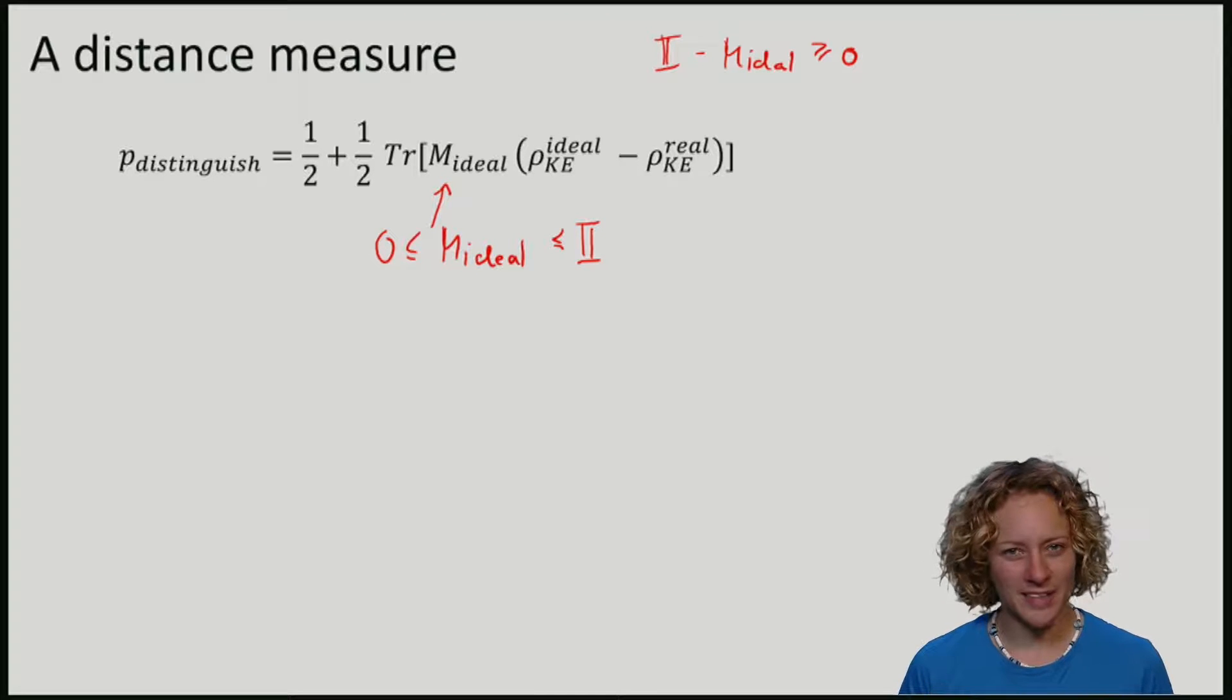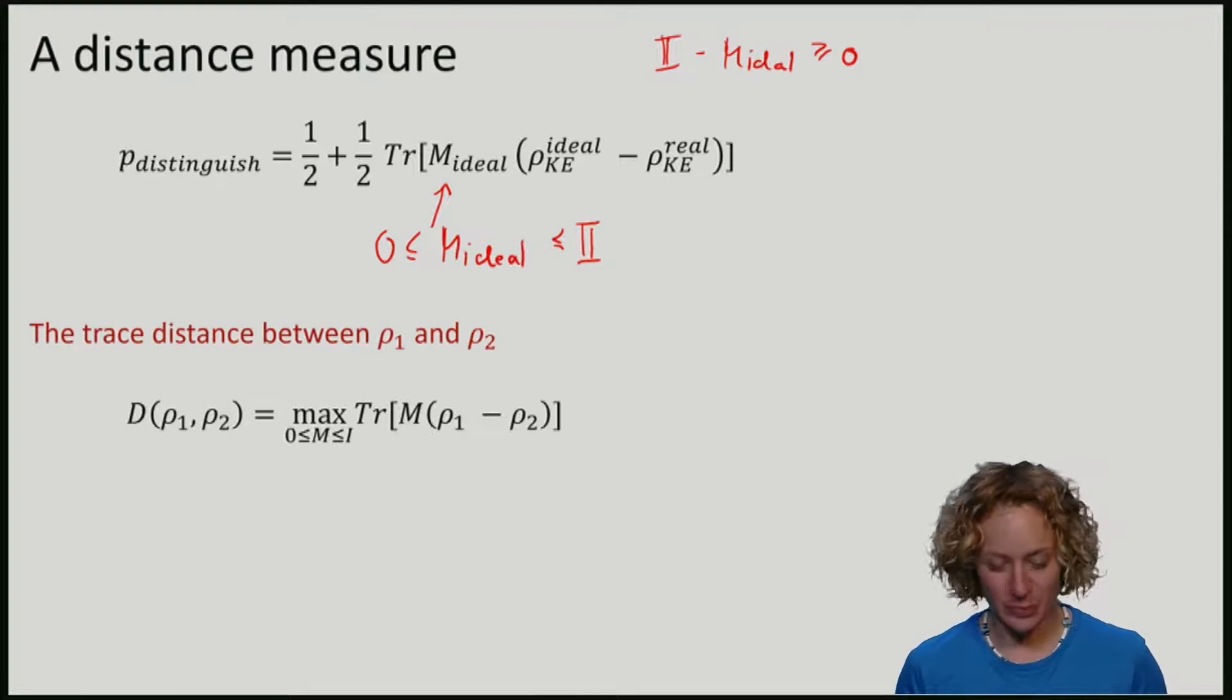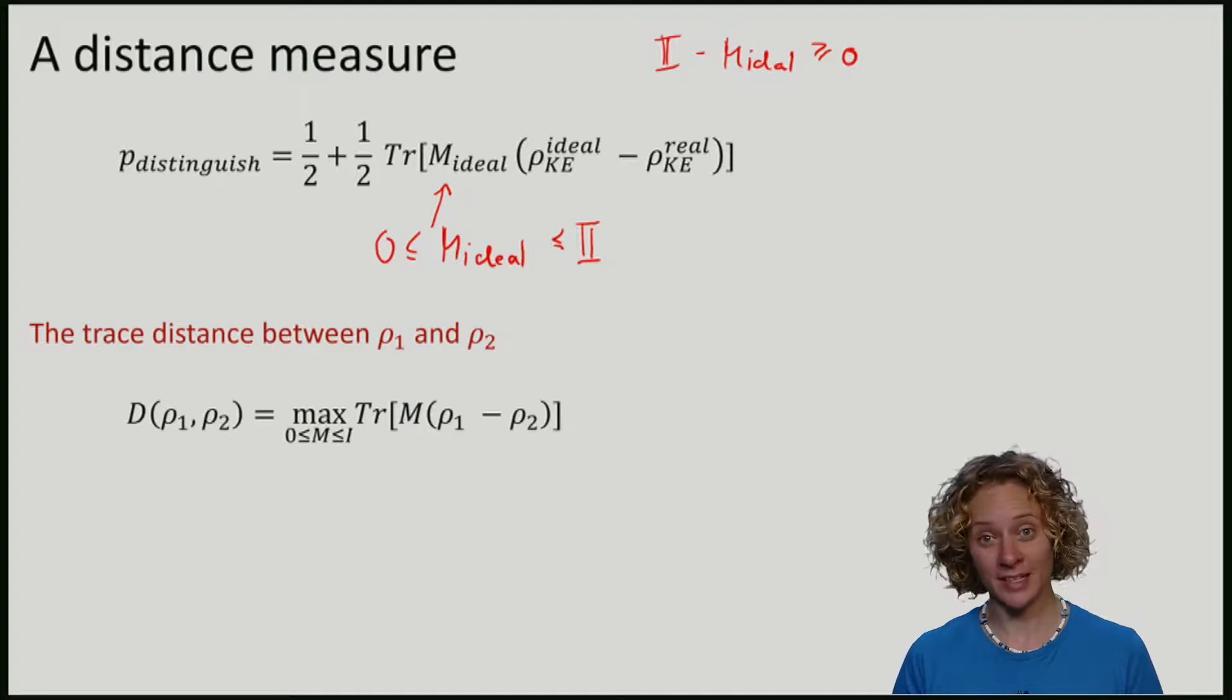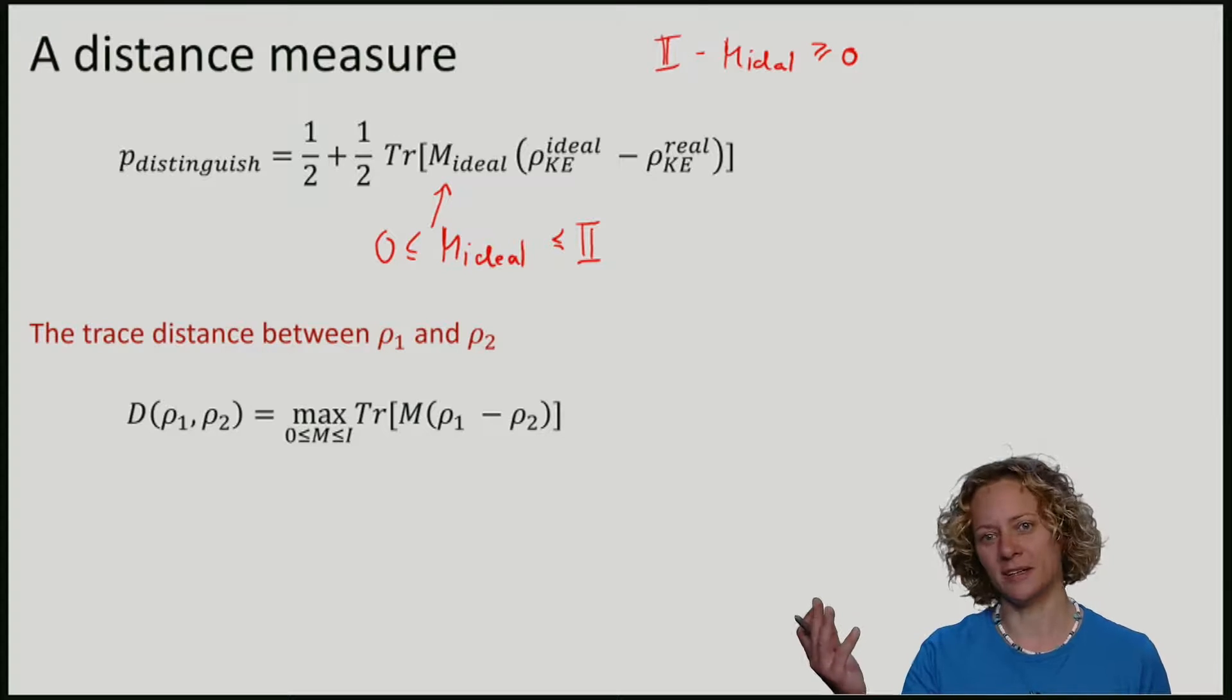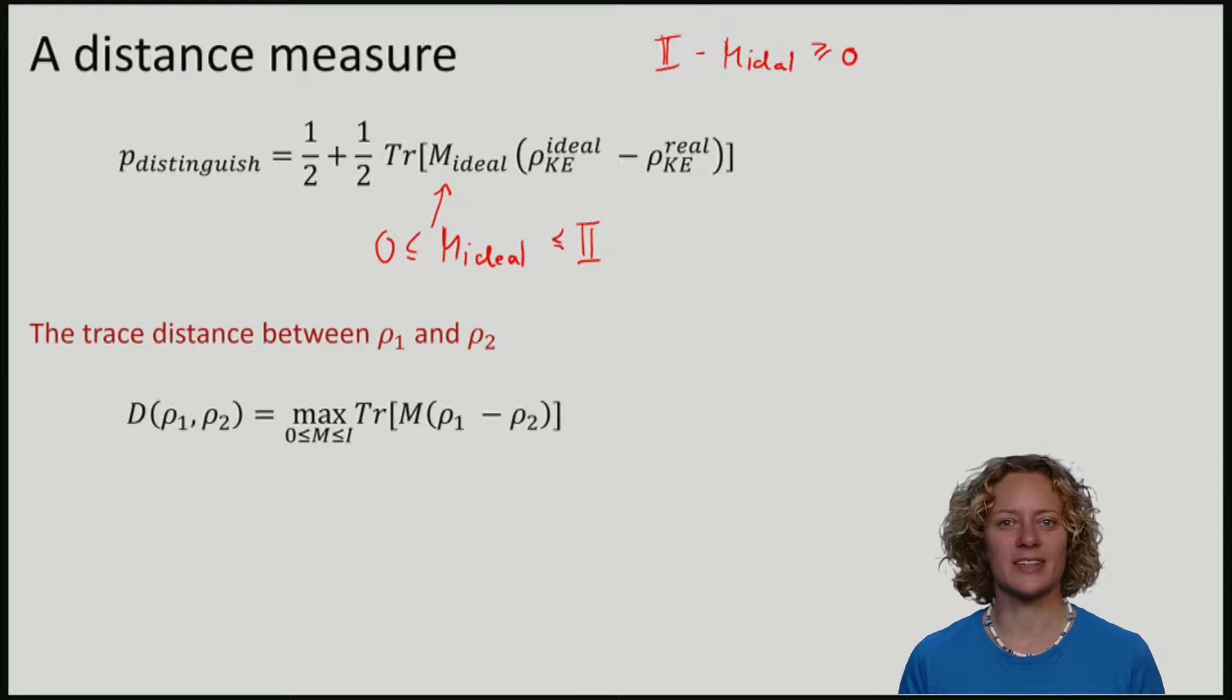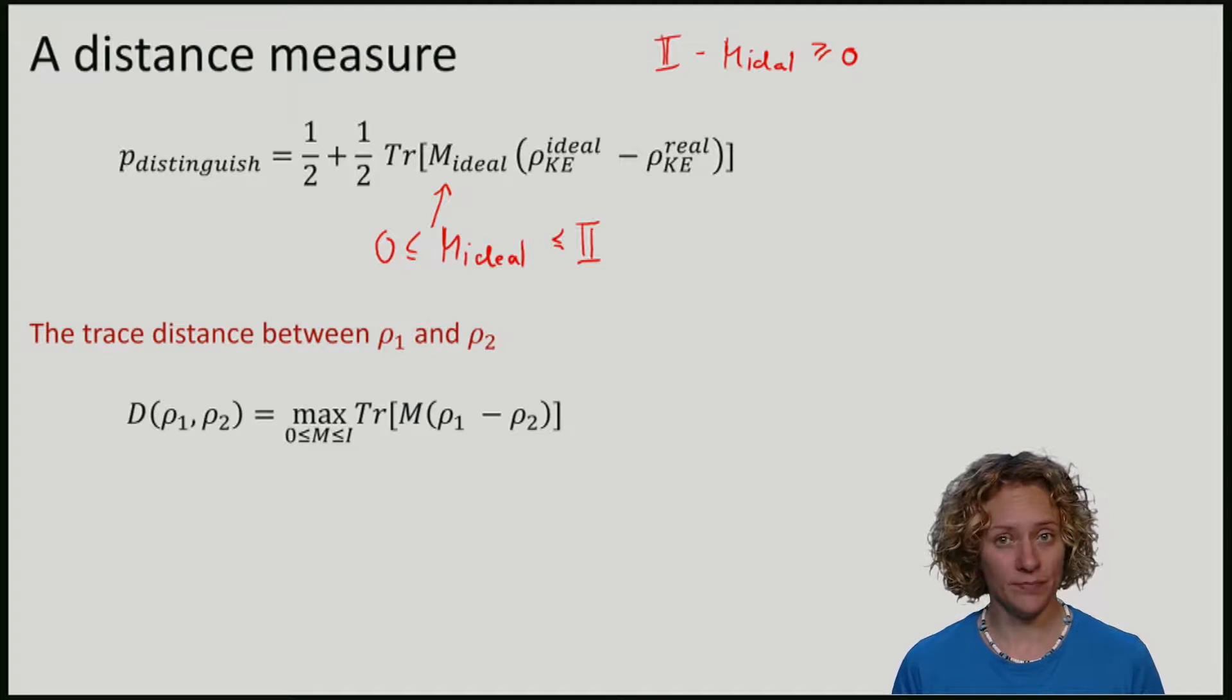So, we maximize this expression over all possible measurement operators M ideal. This gives us a quantity which we will call the trace distance. The trace distance between two states, ρ1 and ρ2, here ideal and real, is defined as the trace of M times ρ1 minus ρ2. And M is a measurement operator, a POVM element.